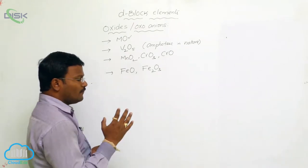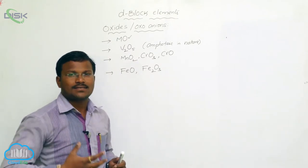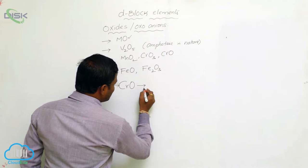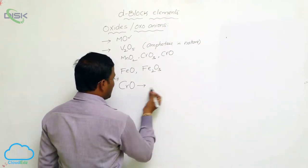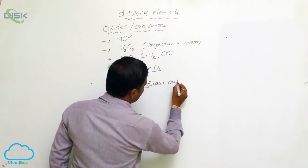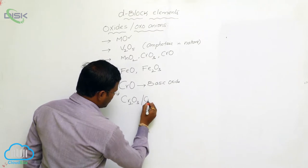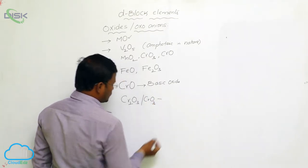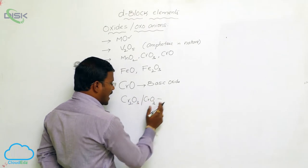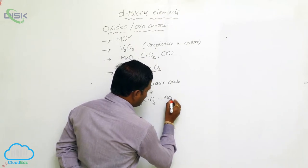Among these oxides, some are amphoteric, some are basic, and some are acidic in character. For example, CrO, when dissolved in water, releases a base, hence it is a basic oxide. Whereas Cr2O3 or CrO3 — chromium trioxide — when dissolved in water, releases acids, so they are called acidic oxides.